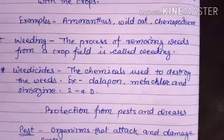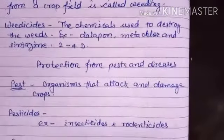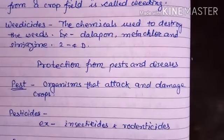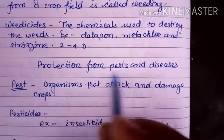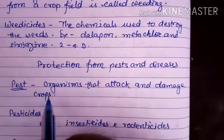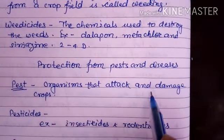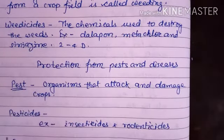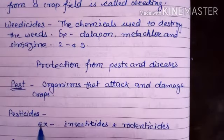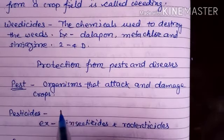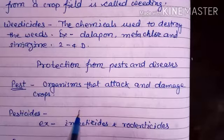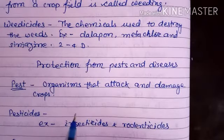Now the students will discuss protection from pests and diseases. Before studying this, we should know what pests are. The organisms that attack and damage the crops are known as pests. Pests can be controlled by pesticides, which are poisonous chemicals. Pesticides kill pests as well as their eggs and larvae but do not affect the plant.